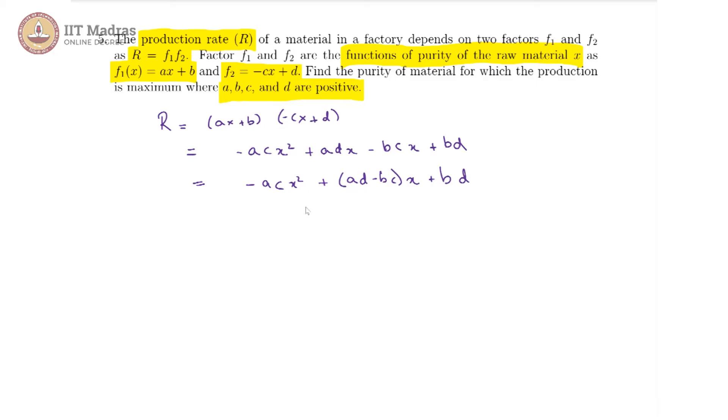We are told that a, b, c, d are all positive, and that indicates the coefficient of x squared is negative because the negative of a times c. That means this is a quadratic function whose parabola is downward-turning. Therefore, we will be able to get a maximum value at some point, and this is going to be at the vertex.